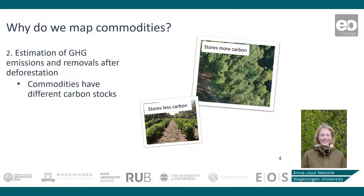Secondly, commodity maps can foster estimation of greenhouse gas emissions and removals after deforestation, as different commodities are associated with different carbon stocks and greenhouse gas emissions. For example, big trees store more carbon than small bushes.